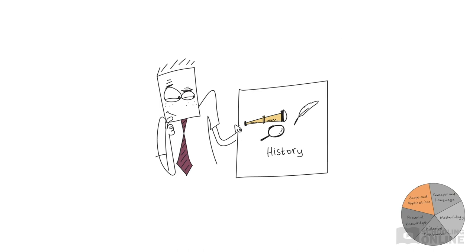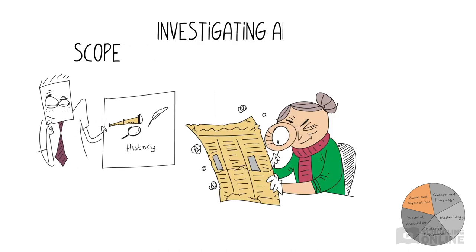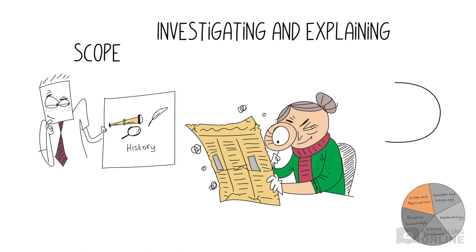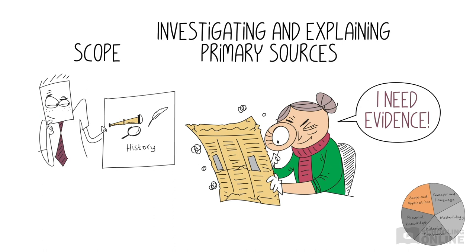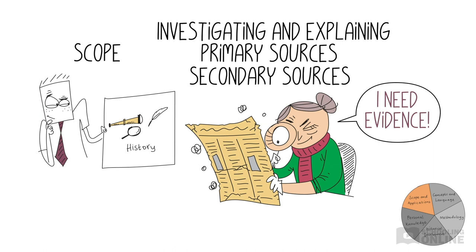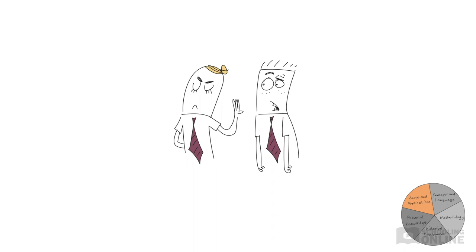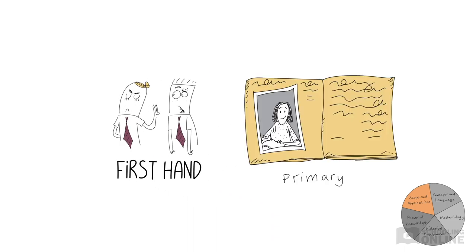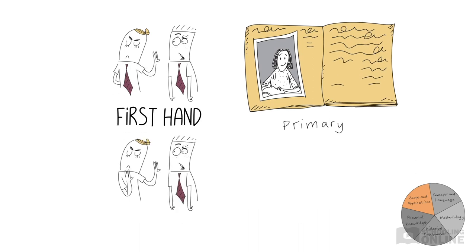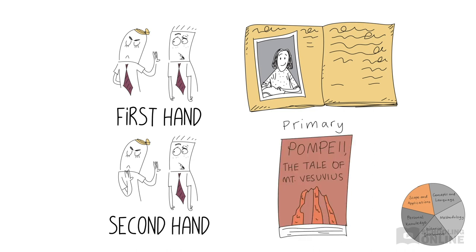Let's delve into the scope and applications of another area of knowledge: history. What is the scope of history? It involves investigating and explaining the recorded past. To study the past, historians need evidence in the form of primary and secondary sources. Primary sources include first-hand accounts of an event in documents or recordings, and objects produced at the time. Meanwhile, secondary sources are second-hand accounts, like what you'd find in a history textbook.